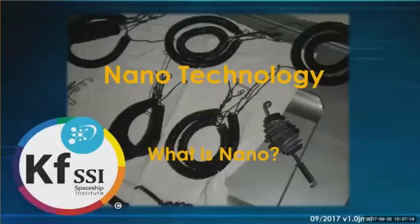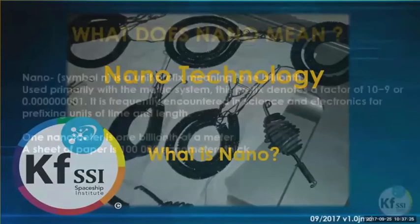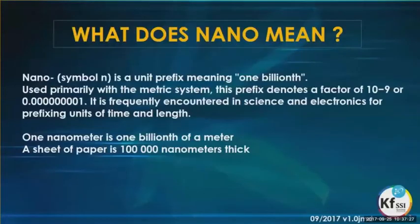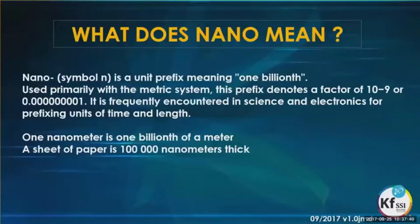The next section is going into the nano and what nano is. Just to get an understanding of the term, the dictionary definition of nano is a tiny, tiny 1 billionth or 10 to the minus 9 factor. So we're dealing with very tiny, tiny particles — what we call the nano.